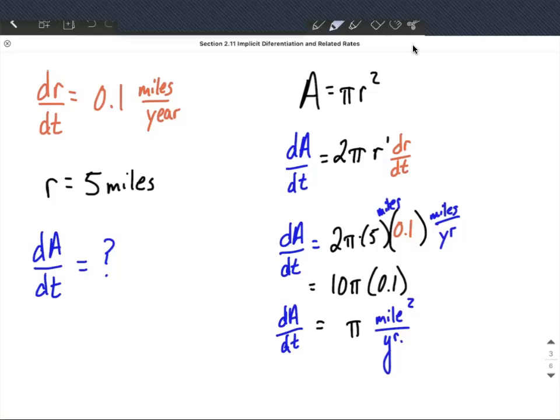So we're increasing by approximately 3.14 miles squared per year.